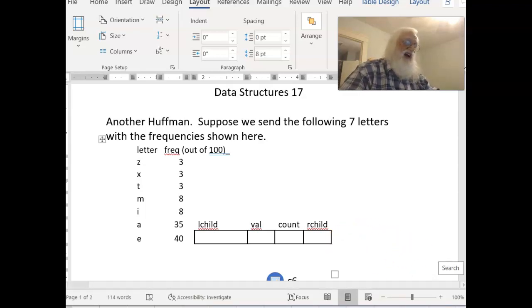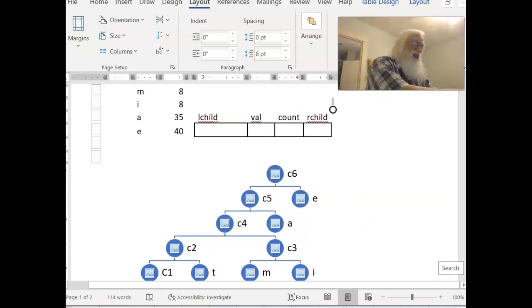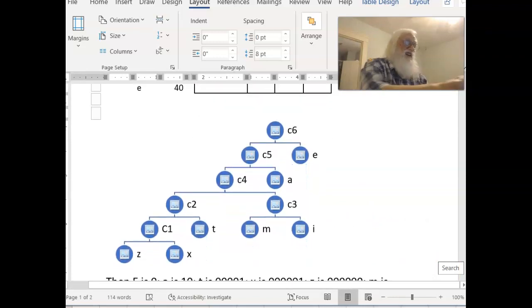The goal that we're going to have is to create a tree that looks like this. This is a Huffman tree. The way to read this is, for every time you go left, you're going to put a zero into the code. And every time you go right, you're going to put a one. So, starting at C6, which is the root of the tree, E is represented by one. You only have to go one node and it's on the right.